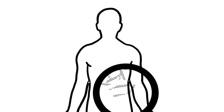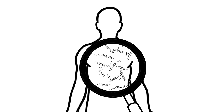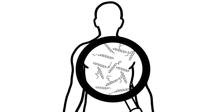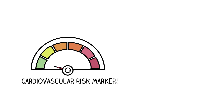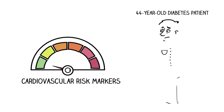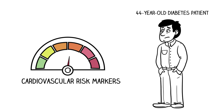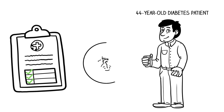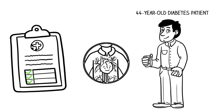Just how important are AGEs in determining cardiovascular risk? Here is a case study obtained from a Diagnoptics customer. When measured, the classic cardiovascular risk markers in a 44-year-old diabetes patient were slightly high, but not above cut-off levels. The clinical conclusion was that, with his current medication, he was a well-controlled diabetic, not at risk for developing cardiovascular complications.